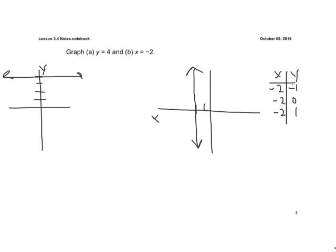If we go left 2, down 1, that's going to be on the line. Left 2, 0, that's on the line. Left 2, up 1, that's on the line. Any point is going to have an x-coordinate of negative 2.